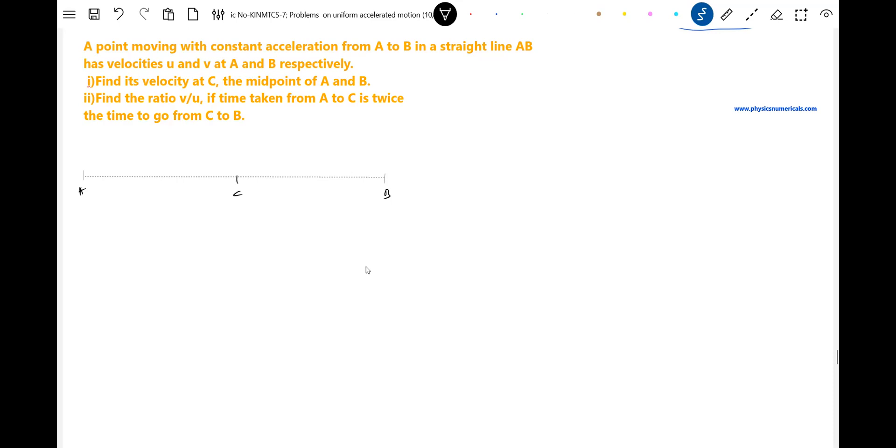There's a midpoint C, right? Here it was having velocity u, here it is having velocity v, here it is having velocity vc. Find the velocity c, the midpoint of AB. This should be the distance L by 2, this should be L by 2, total length is L.